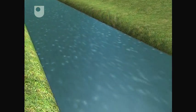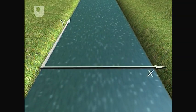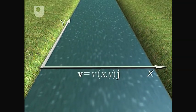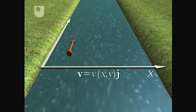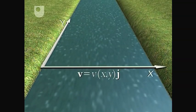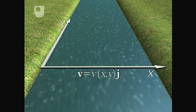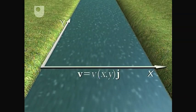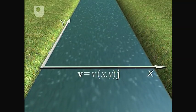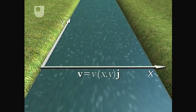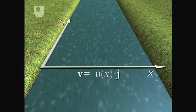To model the velocity field, we first need some axes and a function v(x,y), that describes the unique velocity vector at each point (x,y) on the surface. We'll assume that for this short stretch of the river, v(x,y) doesn't depend on y. In other words, the velocity at any point only depends on its distance x from the left bank. This implies a model surface velocity field of the form v(x,y) = u(x) j.